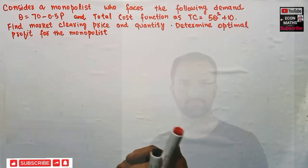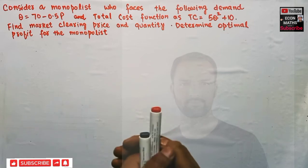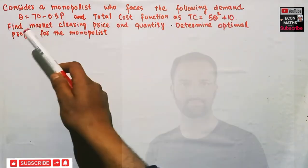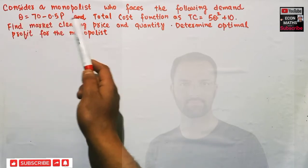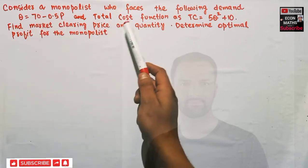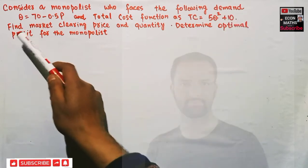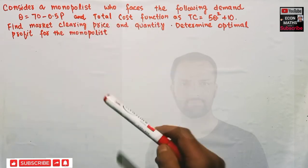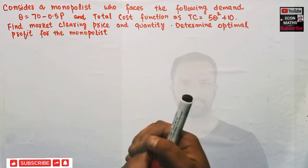Hey, this is Halal. In this video on the mathematical economics series, we will solve a problem asked by a friend, Bransy Caveira, in the YouTube comment box. The question is: consider a monopolist who faces the demand function Q = 70 - 0.5P, where Q is quantity and P is price, and the total cost function TC = 5Q² + 10. Find the market clearing price and quantity, and determine the optimal profit for the monopolist.